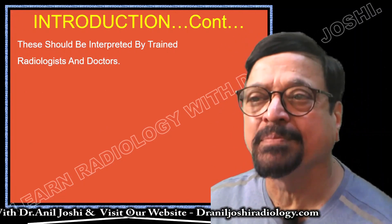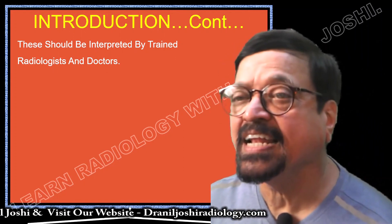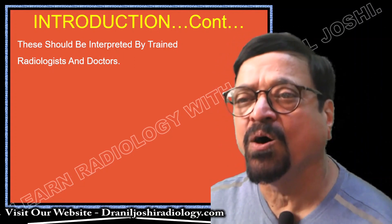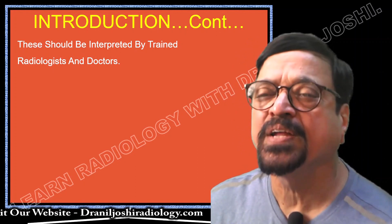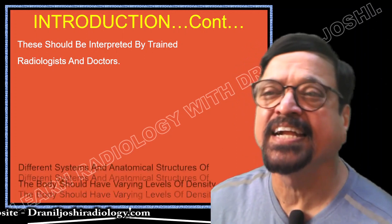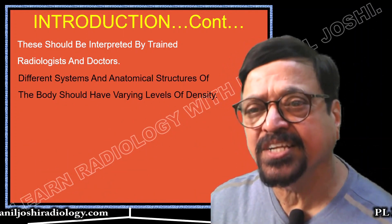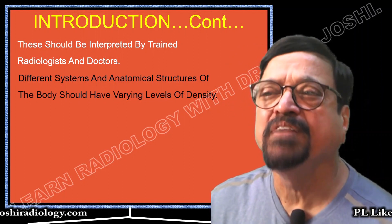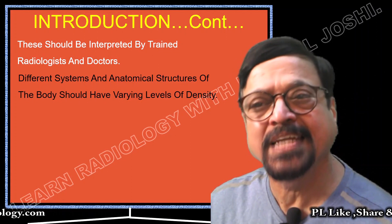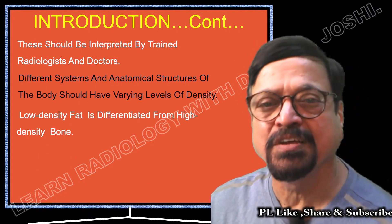This should be interpreted by trained radiologists and doctors because this is sectional anatomy — either axial, coronal, sagittal, or in any plane we want. For that reason, you need a trained radiologist or doctor. Different systems and anatomical structures of the body have varying levels of density; otherwise, everything would look the same. They don't look the same because they have different densities — that's why a blood vessel looks different from soft tissue.